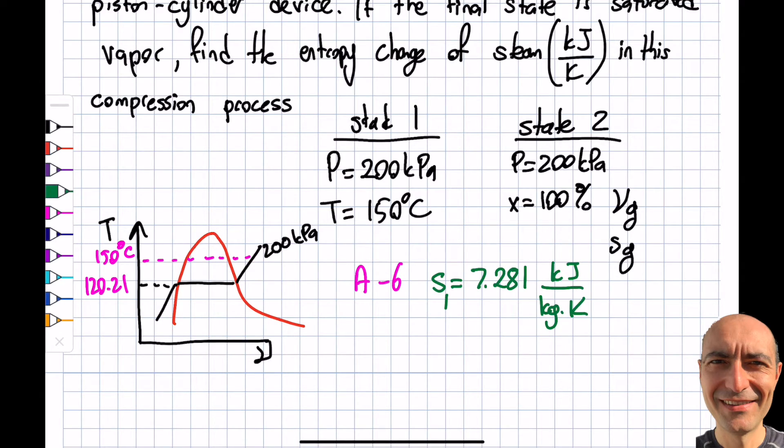What about state 2? To get S2, I have to look at A5 again. The reason is, it says I'm at the saturation temperature of 120.21. It's saying I'm actually right here on the saturated vapor line. So basically the process is from 1 to 2 like this. Not a big deal. I go to A5, I read the SG value. SG at 200 kilopascals is S2, and I read that as 7.1270 kilojoules per kilogram Kelvin.